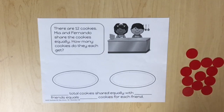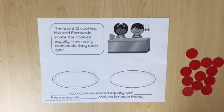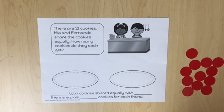This process is reversed as students explore how to share a total set of objects among a known number of groups. Present a scenario such as: there are 12 cookies. Mia and Fernando share the cookies equally. How many cookies do they each get? Discuss what is known and unknown: 12 total cookies, 2 friends sharing equally, and the number each friend gets is unknown.